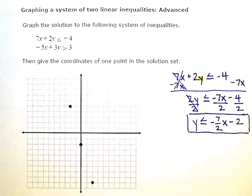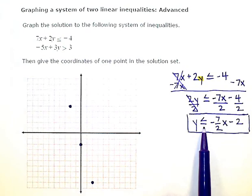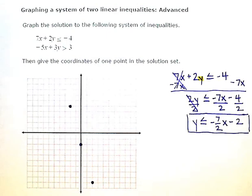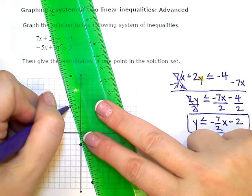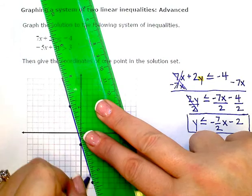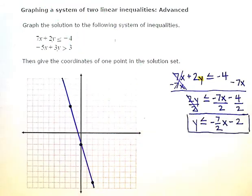Now I'm going to connect up those dots using a solid line since my inequality symbol here has the equal to as part of it. So I'm connecting up those dots with a solid line.